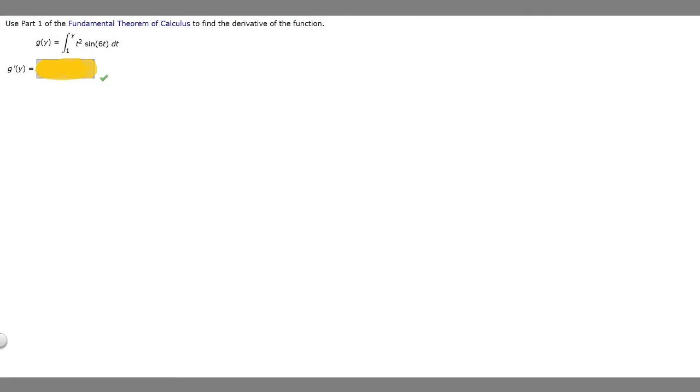So in this problem we're told to use part 1 of the fundamental theorem of calculus to find the derivative of the function. We're told that g of y is equal to the integral from 1 to y, t squared times sine of 6t dt.